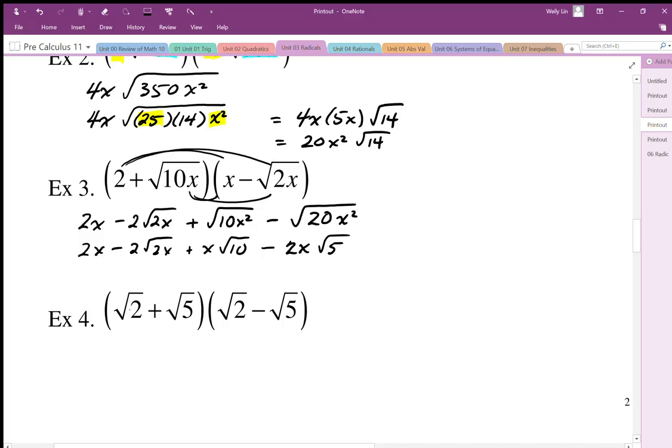This one here is what we call a conjugate pair. So we have root 2 plus root 5, root 2 minus root 5. It's the same expression except one is plus, one is minus. And what ends up happening with these is some terms will cancel out.